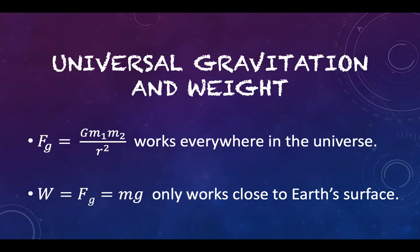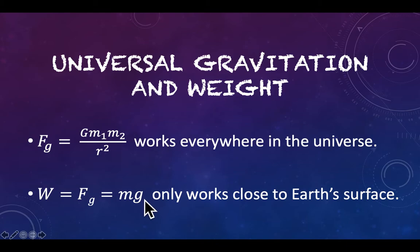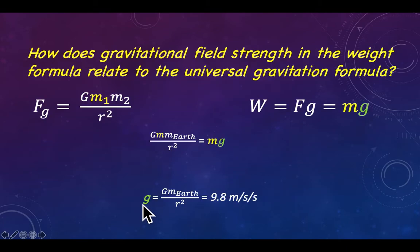The formula FG = G·M1·M2/R² works everywhere — it doesn't matter where you are. However, the weight formula W = mg only works close to Earth's surface, because that particular value of little g — 9.81 meters per second squared — is specific to Earth's surface.